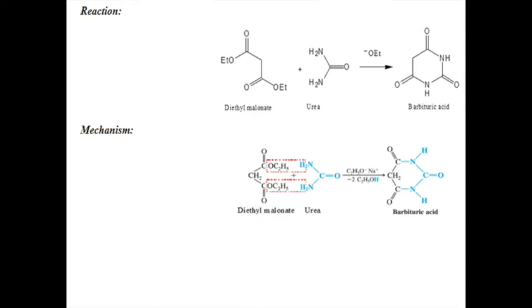Barbituric acid is formed upon condensation at those particular sites. One molecule of hydrogen from urea is removed on one side, and another molecule of hydrogen on the other side. Similarly, from diethyl malonate, one C2H5O ethyl group and another C2H5O ethyl group are removed — giving a total removal of two molecules of ethanol from the reaction, yielding barbituric acid.